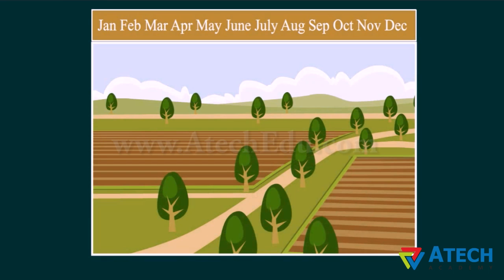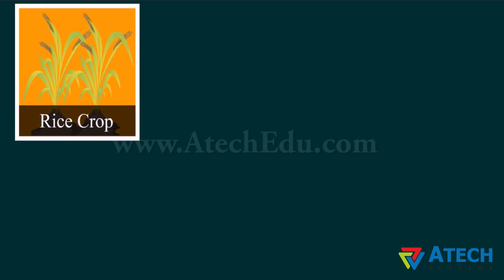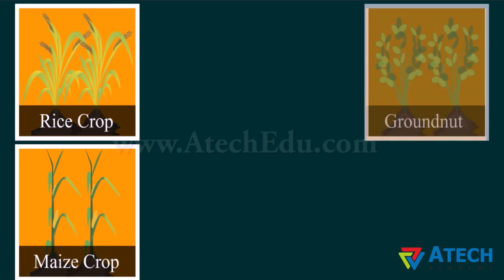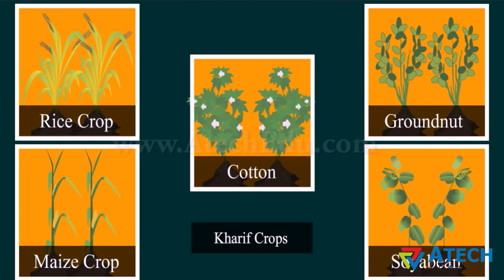Plants that need more water for healthy growth are planted during the rainy season around the month of June and harvested at the end of the rainy season around October. These are called Kharif crops. Some examples of Kharif crops are rice, maize, groundnut, soybean, and cotton.